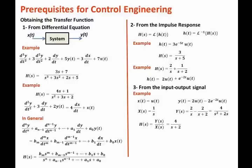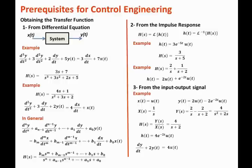Get the Laplace transform of the output and input signals, take their ratio, and that gives the transfer function. Once the transfer function is known, the impulse response h of t equals 4 times e to the minus 2t times u of t. From the transfer function we can also obtain the differential equation: dy/dt plus 2 times y of t equals 4 times x of t, where the denominator gives the output terms and the numerator gives the input terms.